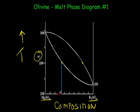So in this case, it would have 10, 20, 30, a little bit less than 35, say 34% iron. And then it must have 66% magnesium component. So that would be for a crystal of olivine at 1500 degrees Celsius in equilibrium with a liquid.